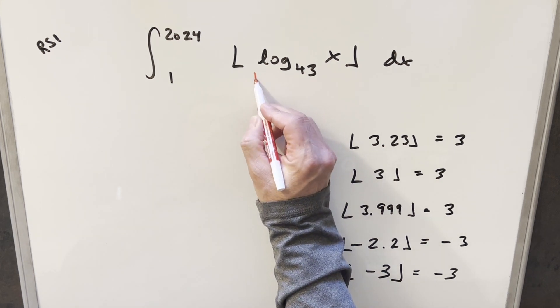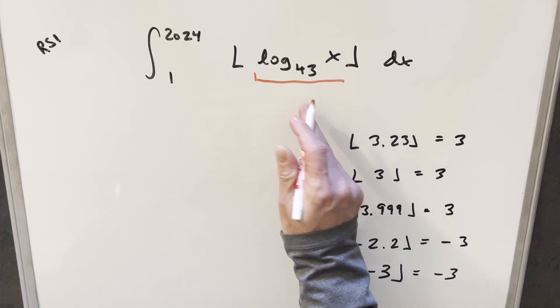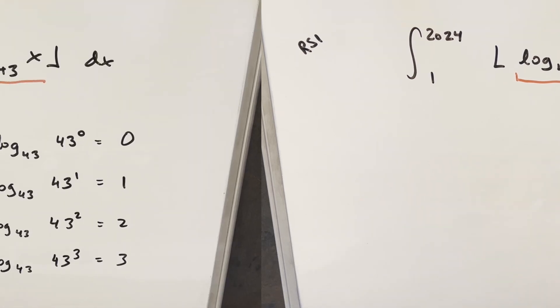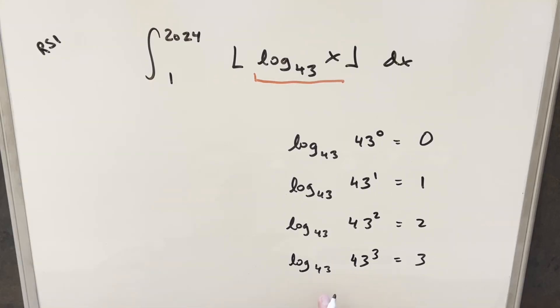So what I want to do is let's get a feel for what's inside the floor. Let's get a look at log base 43 of x. So what I want to do over here to the right is just look at our input here to the floor function when we get integer values. This is pretty easy to see with log properties. Like here, if we have an exponent on a log, I can bring the exponent up front in each of these.